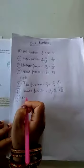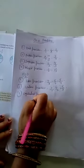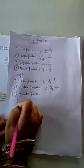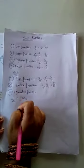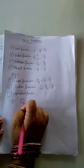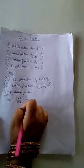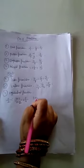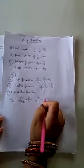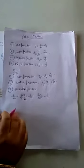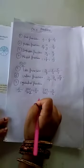Equivalent Fractions: An equivalent fraction is obtained by multiplying or dividing the numerator and denominator of a given fraction by the same number. For example, 1 by 2 is equal to 1 multiplied by 2 over 2 multiplied by 2, which gives 2 by 4. Similarly, 1 multiplied by 3 over 2 multiplied by 3 gives 3 by 6.